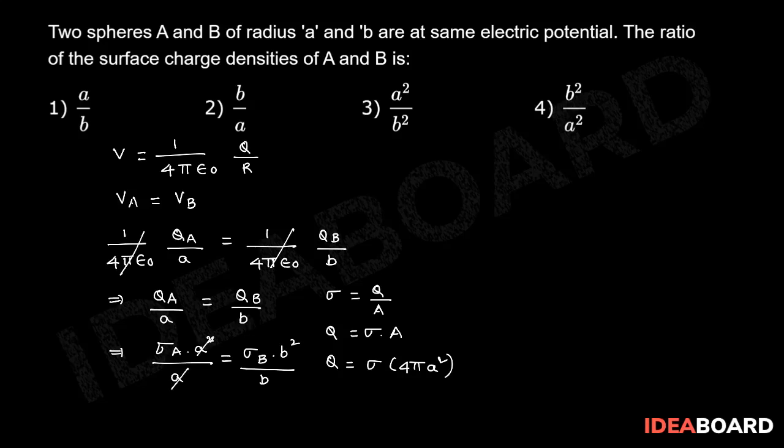Therefore, A square, B square get cancelled. So this is sigma A into A is equal to sigma B into B.